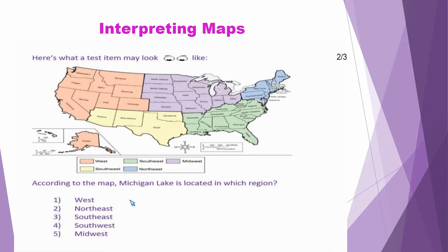So now, in order to answer this question, you want to make sure that you are familiar with your map key, which is located here. Your map key is going to explain to you how to read your map. So when we look at our map key, we see that first it is color-coded, and these colors tell us something about our map.